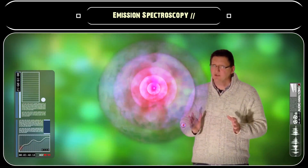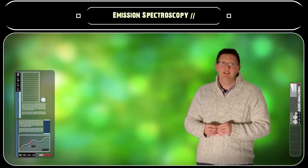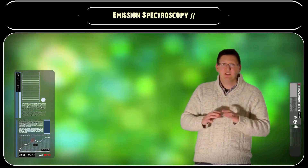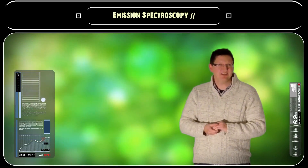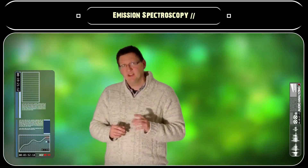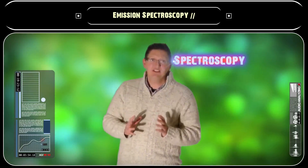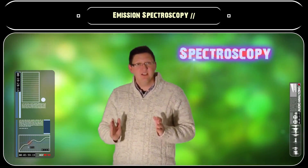Not all elements absorb the same colours, or the same wavelengths of light, and that's because the difference between each of the energy levels, or electron shells, differs slightly from element to element. The science of studying the interaction of light with matter in this way is called spectroscopy. And when we study the absorption of light, it is referred to as absorption spectroscopy.